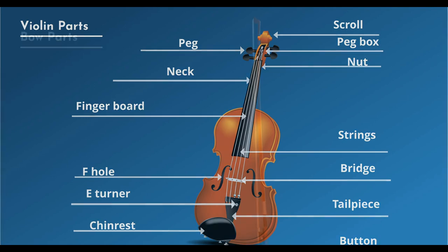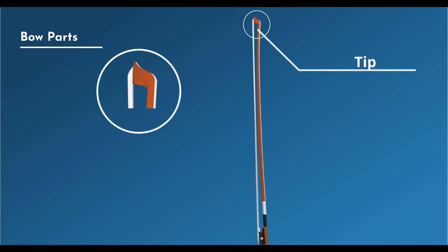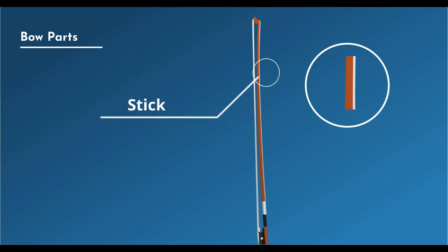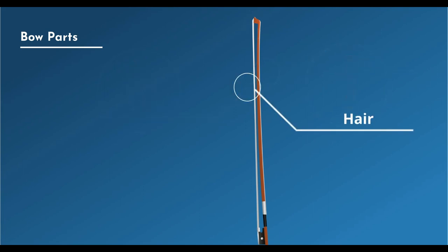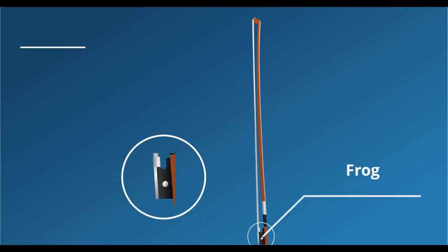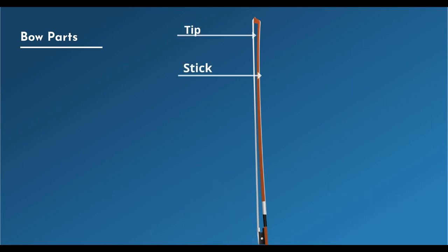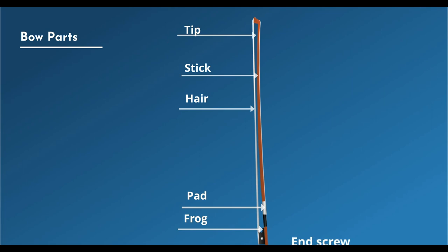And the components of the bow: tip, stick, hair, pad, frog, and end screw.